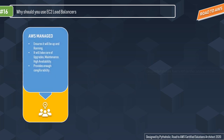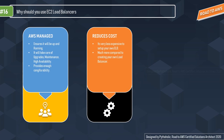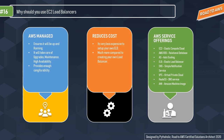Why should you use EC2 load balancers? First, they are AWS managed — AWS ensures they are always up and running, handles periodic upgrades, and gives users the best configurability. Second, reduced cost — since AWS maintains the underlying infrastructure, operating cost is much less than setting up your own load balancer. Third, service offerings — load balancers integrate with most AWS services like EC2, ELB, RDS, SNS, Route 53, AMI, and auto scaling groups.